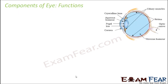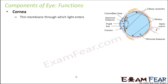Let us talk about the other components of the eye. The next component is cornea, which is a thin membrane through which light enters. For example, if you put an opaque curtain on your window, will the light enter inside your house? No. But if you put a transparent curtain, the light will still be able to enter. So the cornea is like a thin membrane through which light can enter inside the eye.